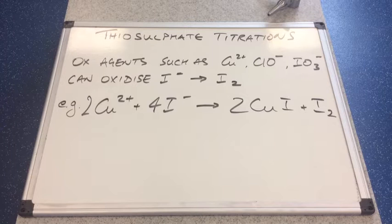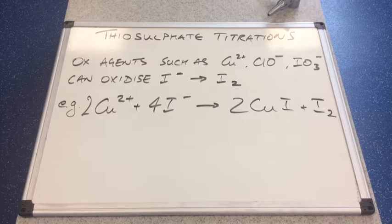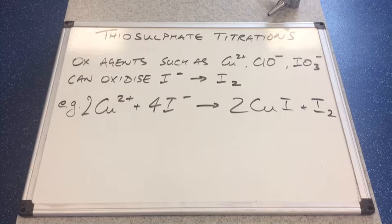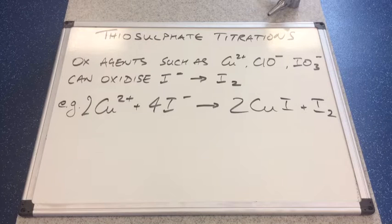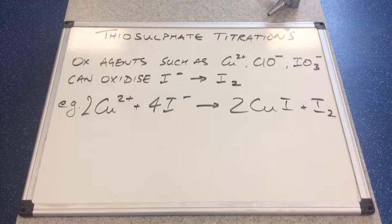We're going to start with the premise that oxidising agents such as Cu2+ ions, ClO- ions, and IO3- ions — these are the three examples often quoted — these can oxidise iodide ions to iodine.